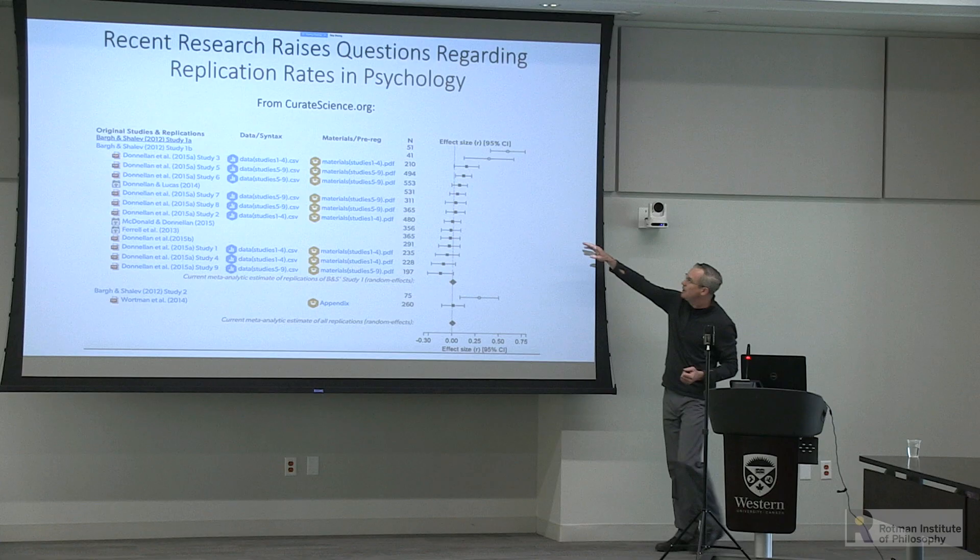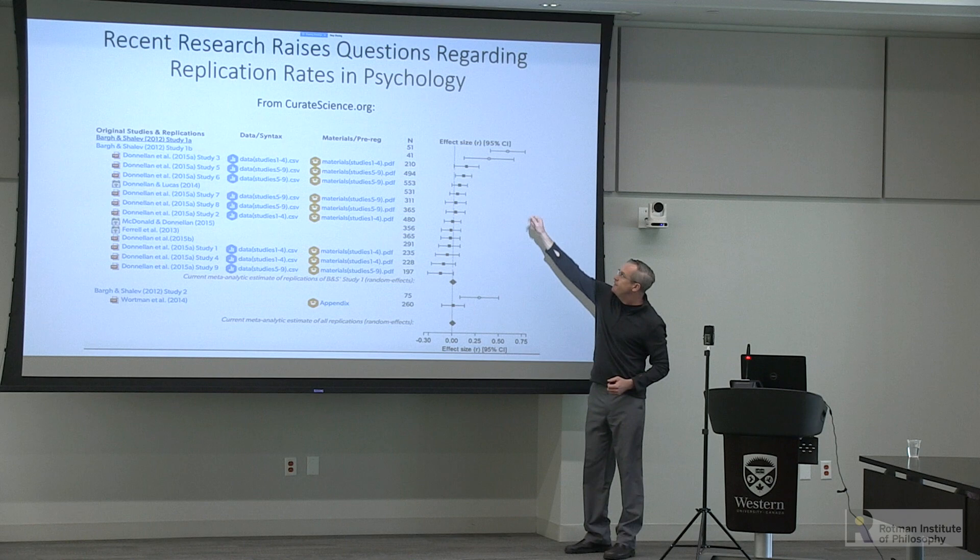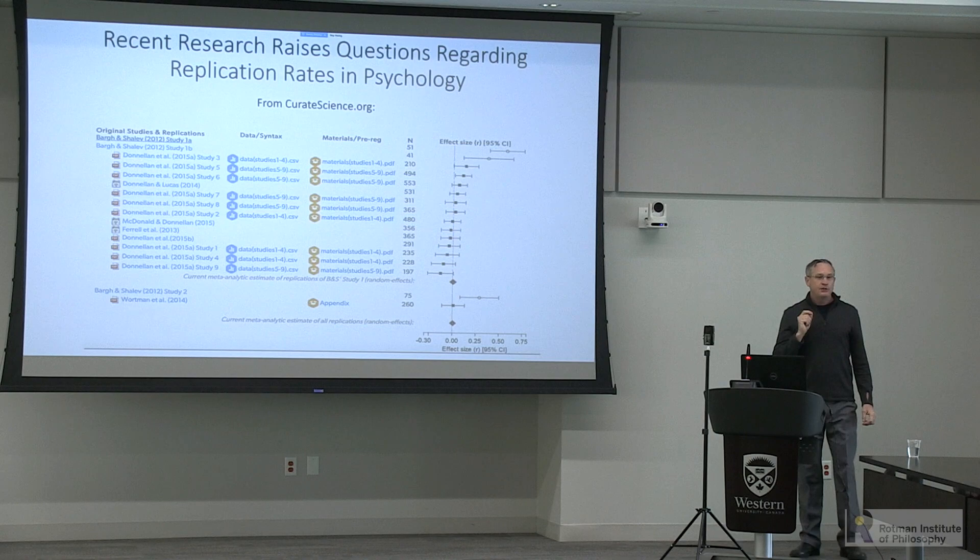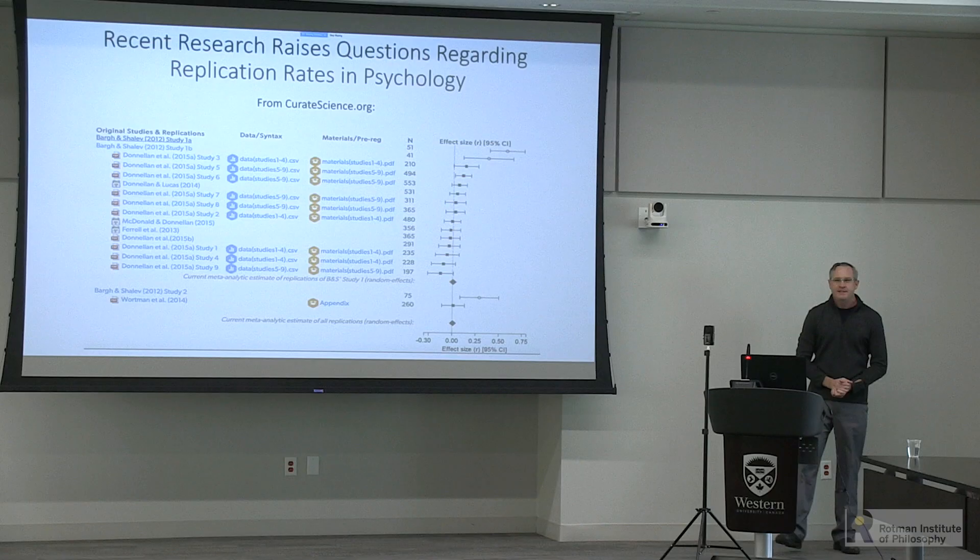One example is from Barge and Shalev with an N around 50. They found a positive association between trait loneliness and a combination of three variables: how many times you shower a week, how warm you like the water, and how long you shower — the idea being that lonelier people try to make up for it by feeling the warmth of the shower. Brent Donald's group tried to replicate this and, using the methods section and talking to the authors, found inconsistent results.